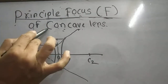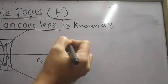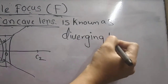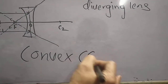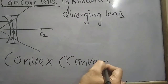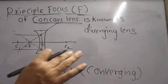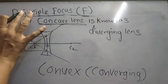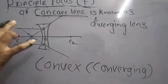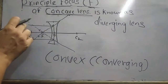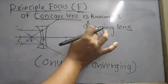That is why the concave lens is known as a diverging lens. The convex lens is called a converging lens because light rays parallel to the principal axis converge at a single point after refraction. The concave lens is called a diverging lens because light rays parallel to the principal axis diverge from each other after refraction.